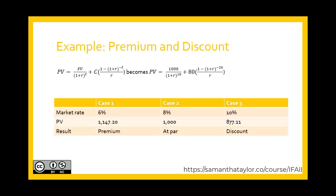Let's crunch some numbers. I'll put up on the screen what your PV calculations would be for each case. Case one is at a premium — we can attract a higher rate to market so we sell it for more. Case two is at par — it equals what we would get in the future. And case three must be made more attractive and is sold at a discount.